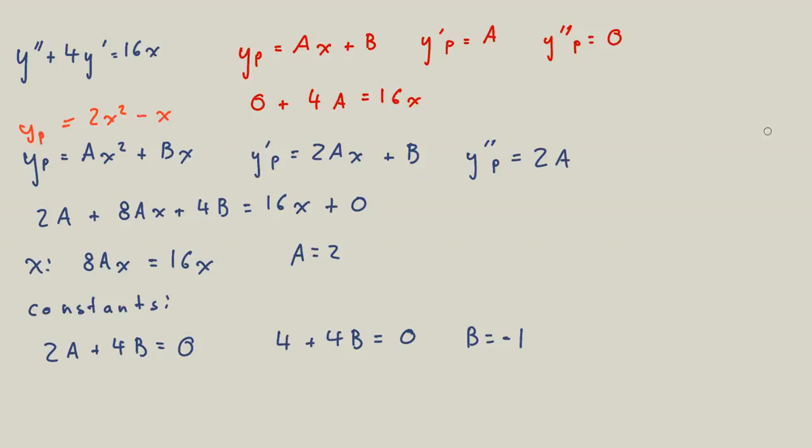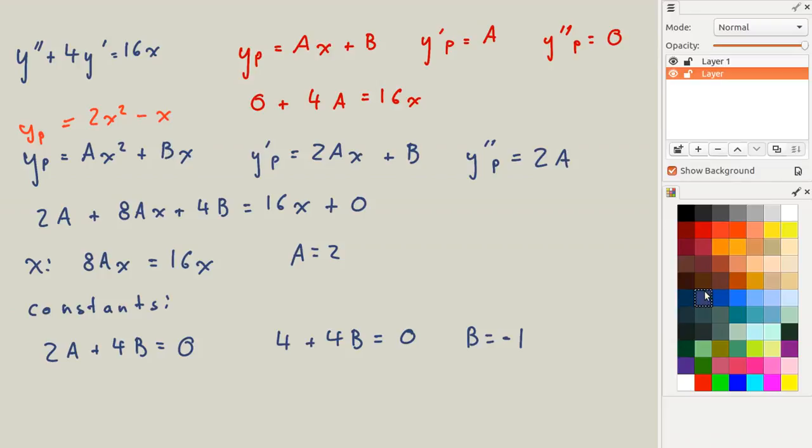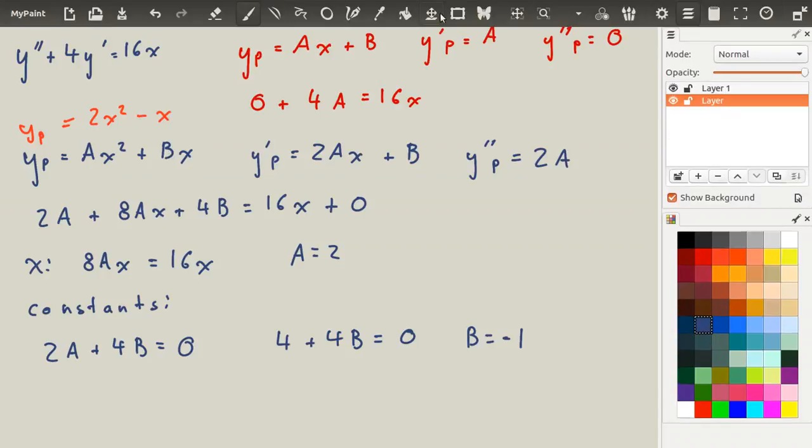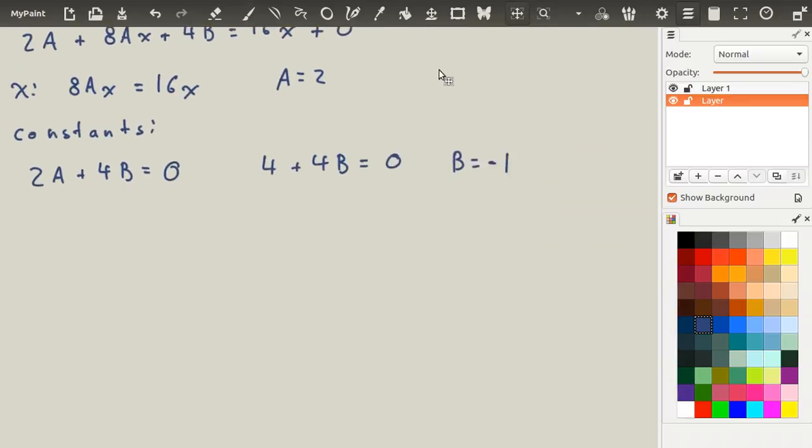So we're not quite done because we've only found the particular, we haven't found the characteristic. But that's actually pretty easy to do. So I'm just going to scroll down right here.